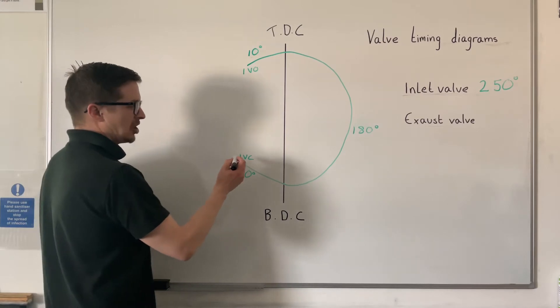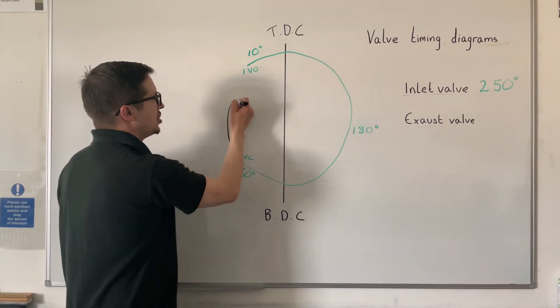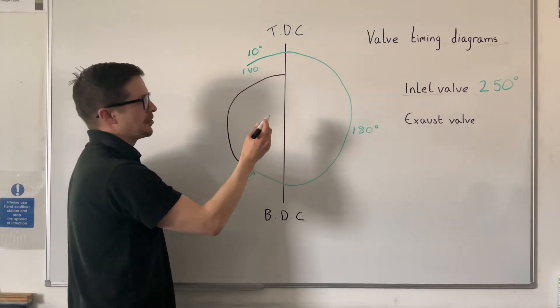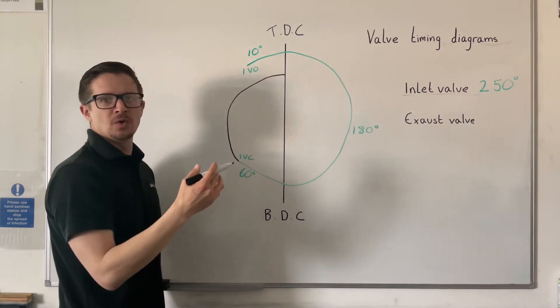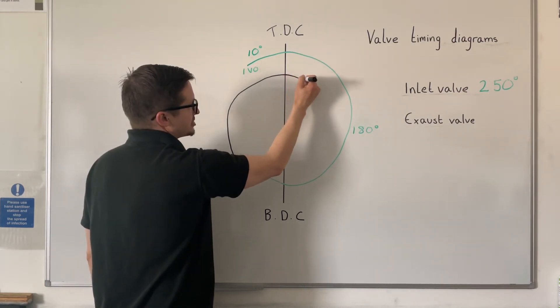After the inlet valve closes on the compression stroke, the compression stroke finishes with both valves closed. The next stroke is the power stroke, which is where your fuel and air mixture is ignited by the spark plug.